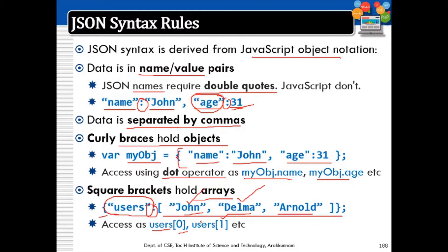Variables are declared using name-value pairs. Objects are declared using curly braces. Square brackets hold arrays — within curly braces give the name of the array, then after a colon give the values within square brackets. Finally, close the curly braces, and the statement ends with a semicolon.